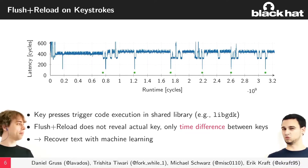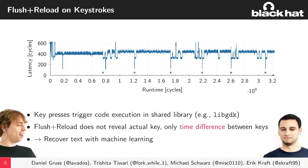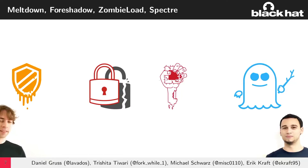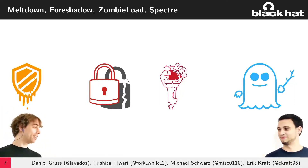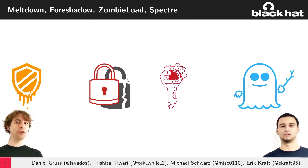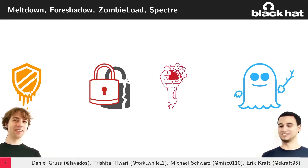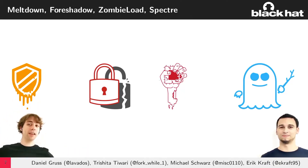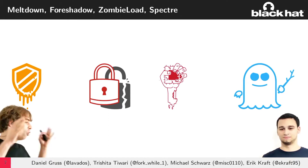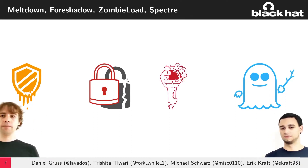There are also stronger attacks. Some published examples include Meltdown, Foreshadow, Zombieload, and Spectre. We don't have time to go into all of these in detail — we wanted to focus on the page cache attacks. These were just examples of what you can do with small timing differences in a micro-architecture.